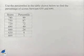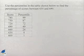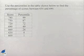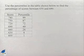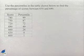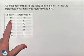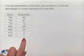Now here's another problem dealing with percentiles. Use the percentiles in the table shown below to find the percentage of scores between 630 and 690. This time we're given the scores in our first column and the percentiles associated with those scores in the second.